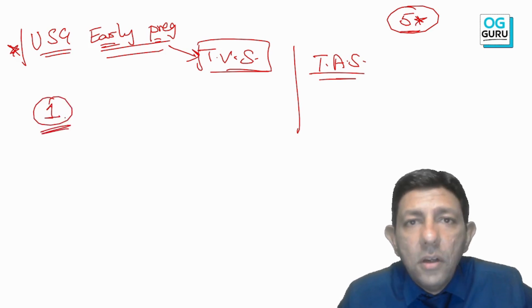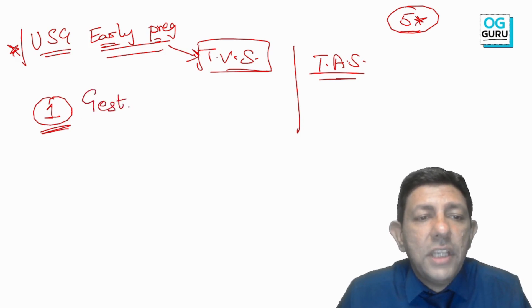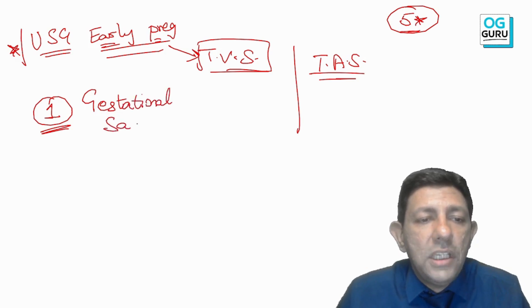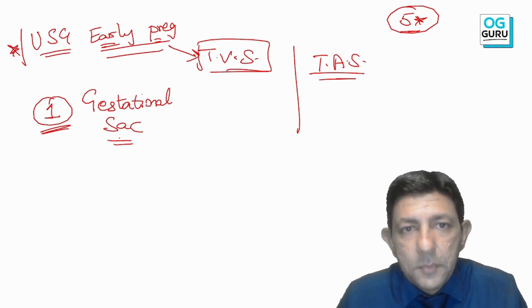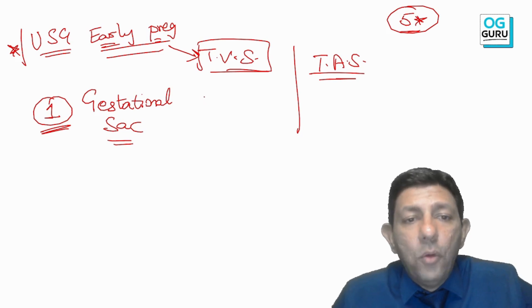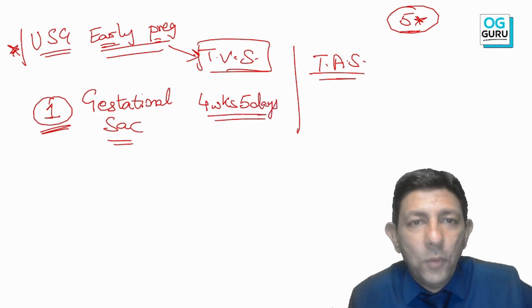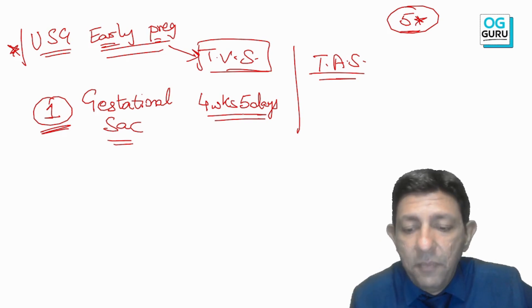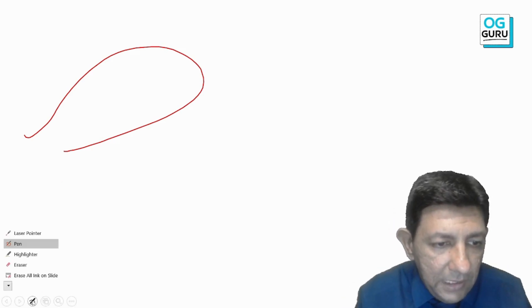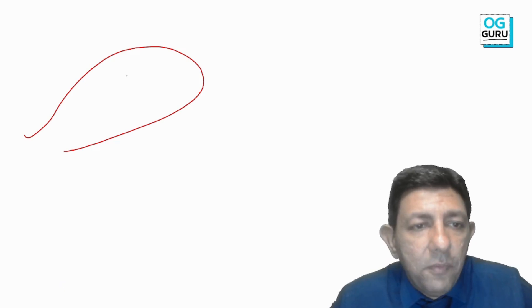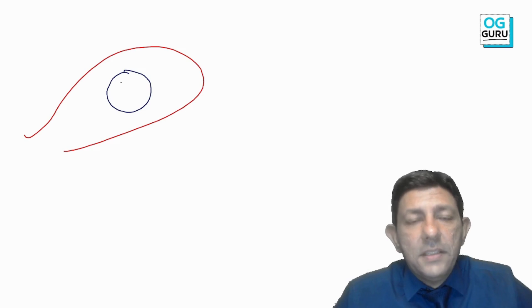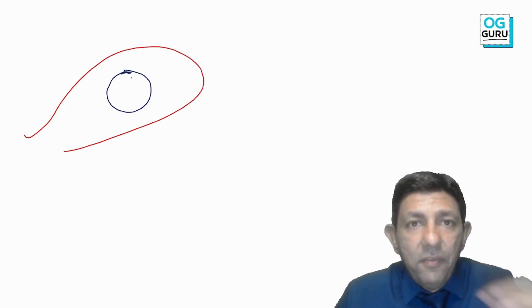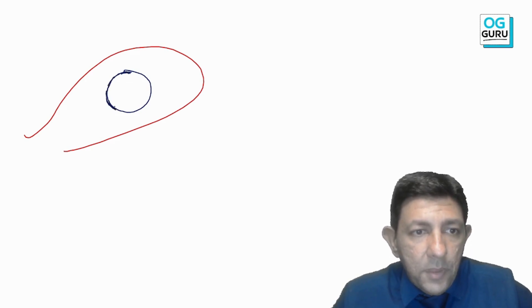The first question: what is the earliest sign of pregnancy on ultrasound? This is a very important MCQ. The answer is the gestational sac, also called the G-sac. The gestational sac is seen at 4 weeks 5 days from LMP. It appears within the uterus as a well-circumscribed structure.